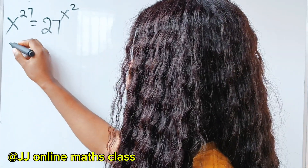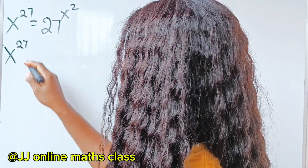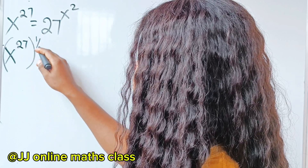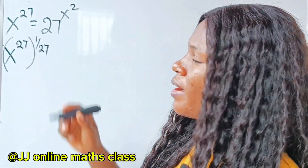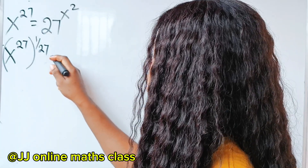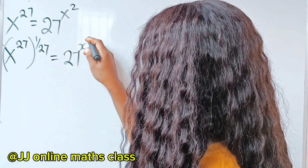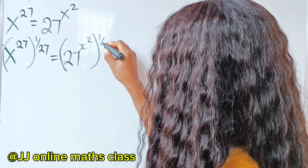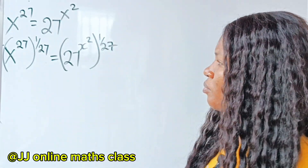So the first thing I will do is, since we have this raised to the power of 27, I'm going to raise each side to the power of 1 over 27, because that's the only way I can remove that 27. 27 is equal to 27 to the power of x squared, everything raised to the power of 1 over 27.